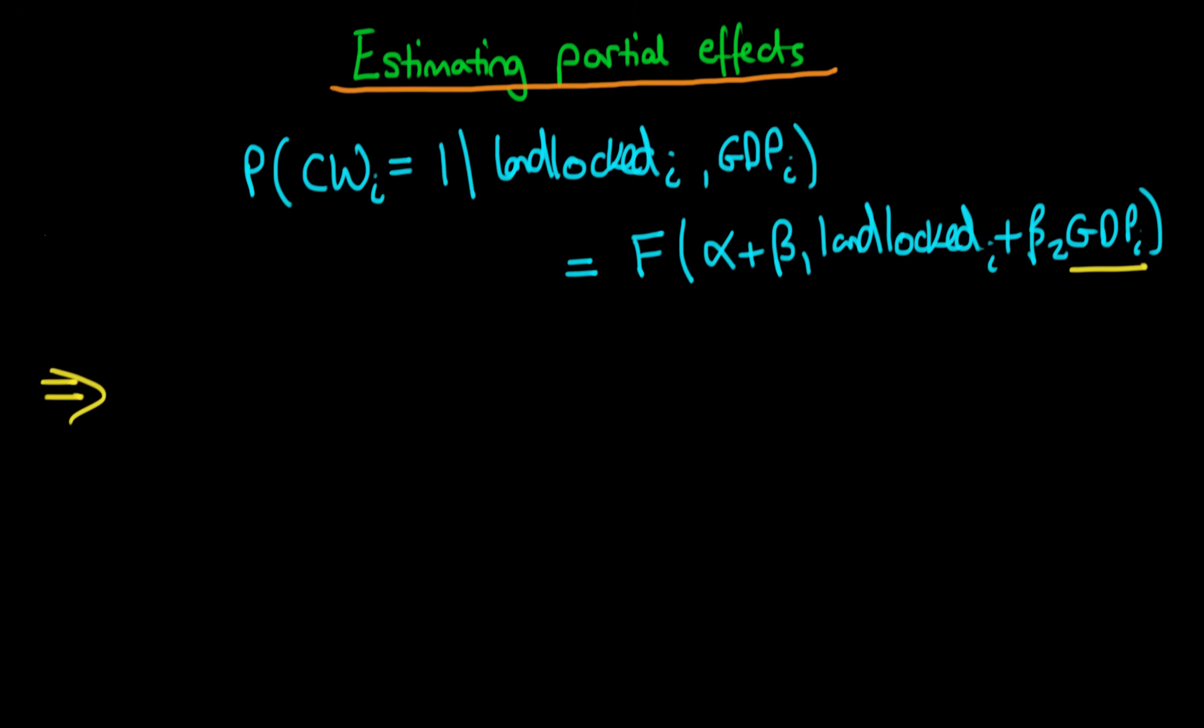Well, because we're only interested in the partial effect of GDP holding all other variables constant, that means that we're going to take the partial derivative of the probability with respect to GDP in this particular circumstance. And if we do that,